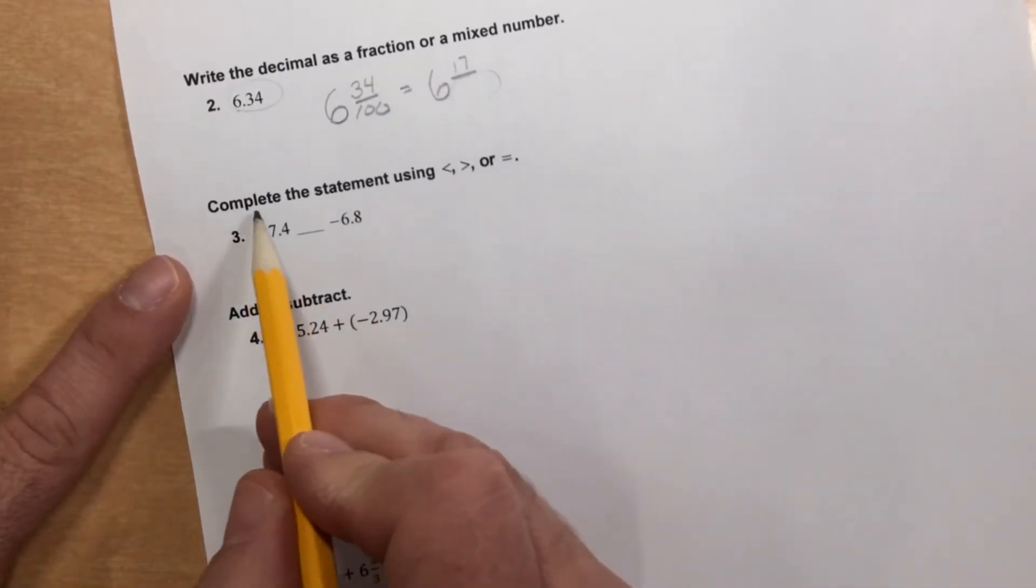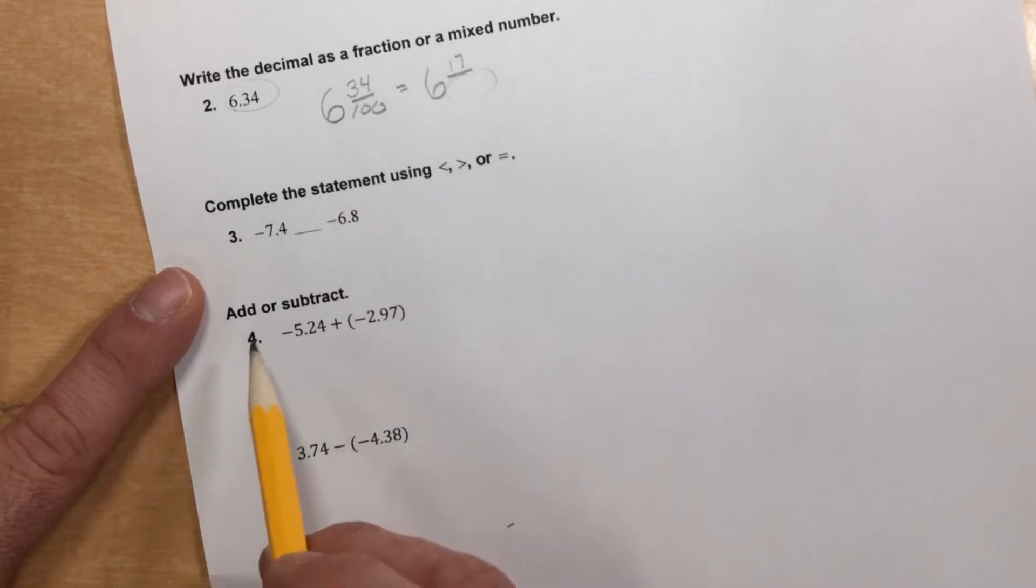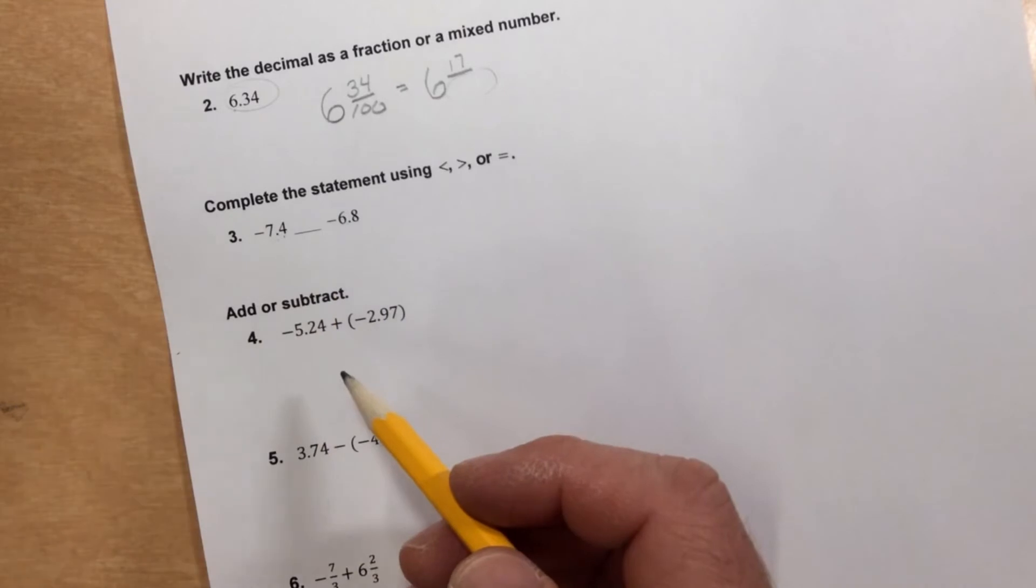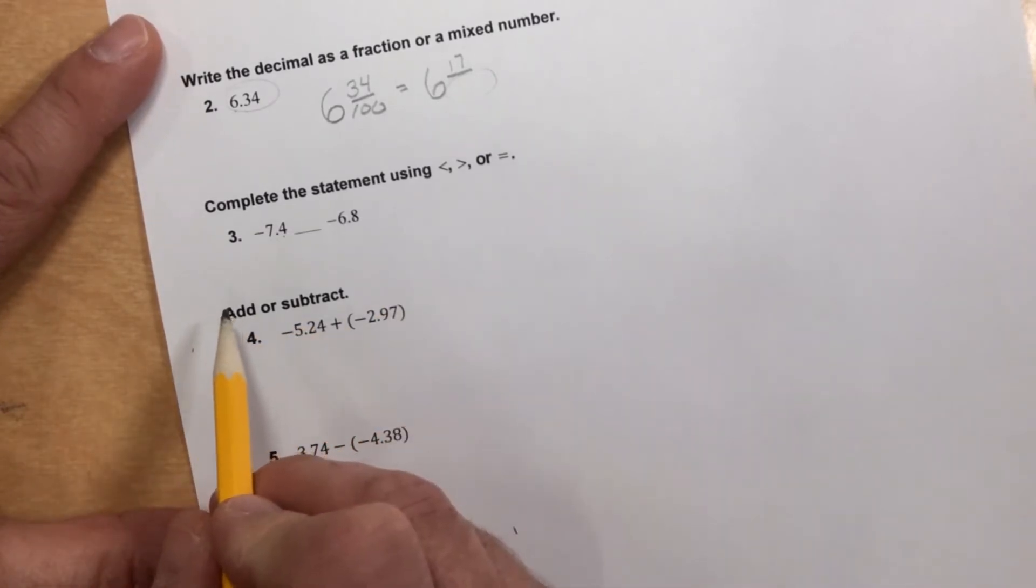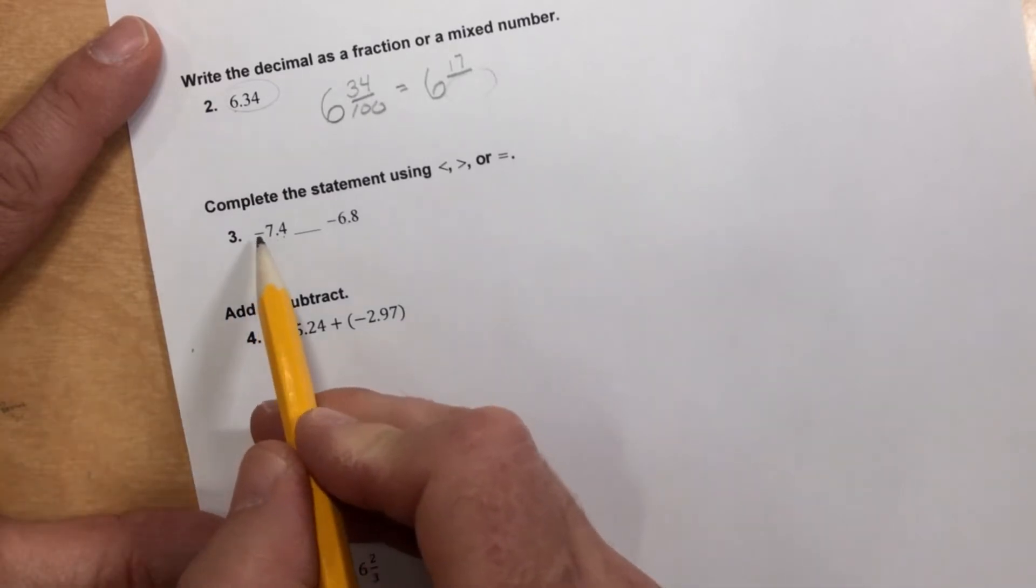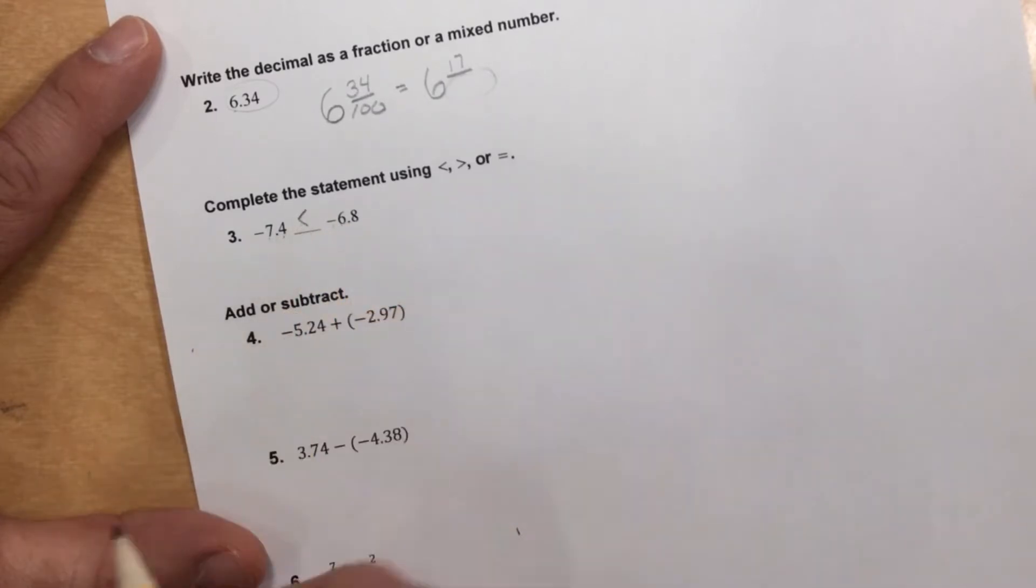Number 3. Complete the statement using less than, greater than, or equal to. Negative 7.4, negative 6.8. Well, I want you to think of temperatures here. Which one would be a colder temperature? Although they're both below zero, one is colder than the other. The colder temperature is the lesser number. Negative 7.4 is colder than negative 6.8. So negative 7.4 is less than negative 6.8.